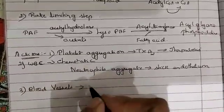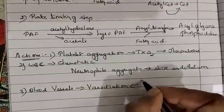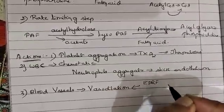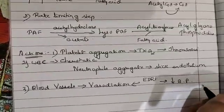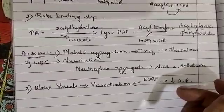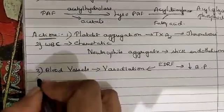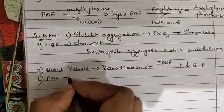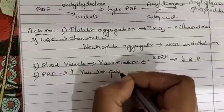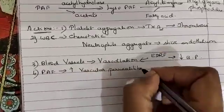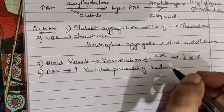The third action is on blood vessels. PAF causes vasodilation, which may be due to an endothelium-dependent releasing factor, and this causes a decrease in blood pressure — most commonly seen on intravenous injection. The next action is that PAF is known to increase vascular permeability, which is responsible for causing edema at that particular site.